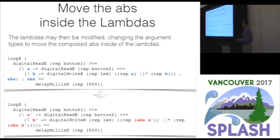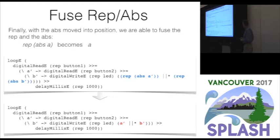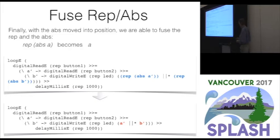Then we want to move the abs inside the lambdas. By changing the type of the lambdas from a to a-prime, we replace a with an abs of a and eliminate the abs from the composition on the end. This gets us to the point where we have the rep and the abs right next to each other, allowing us to take the next step: fusing those reps and abs together. As stated, rep of abs of a is simply a — so we're able to eliminate those, and we arrive at exactly what we would have if we had handwritten the deep DSL.